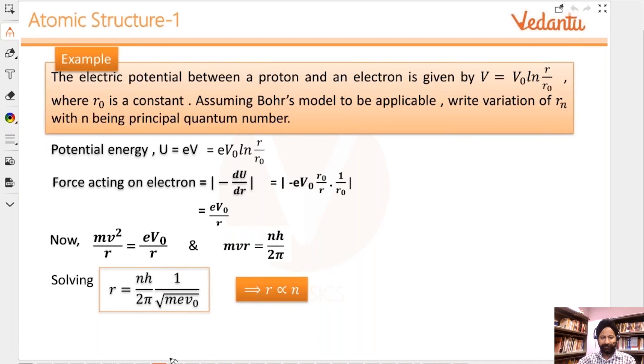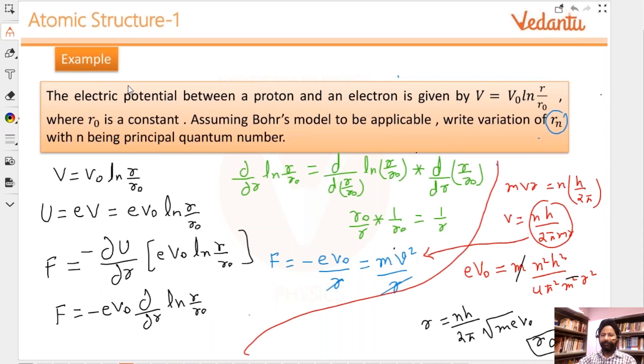They're asking for variation of rₙ with n, so r varies directly as n. Before I conclude I did the right thing, let me make sure there's no mistake. Anybody who did not understand part of this, let me know - green color, blue color, black color, red color. If it's clear, write the word clear so I know I can move on.